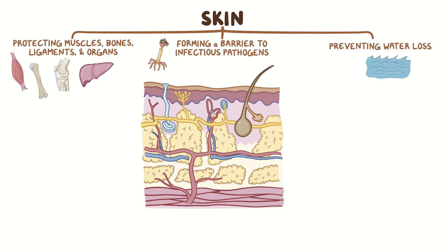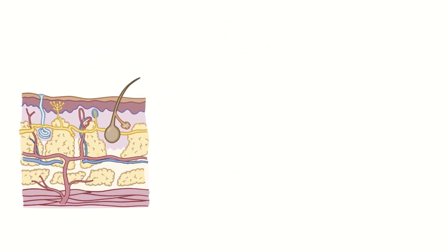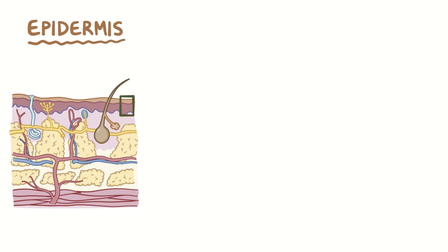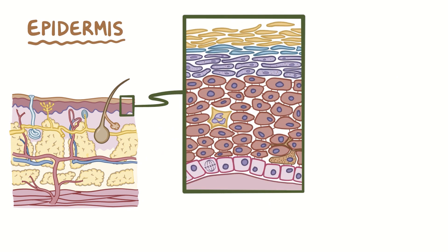The skin is divided into three layers: the epidermis, dermis, and hypodermis. The epidermis forms the thin outermost layer of skin, and it's made up of several layers of keratinocytes.